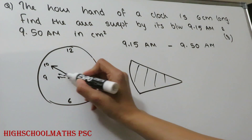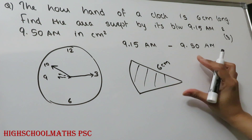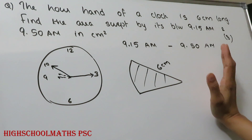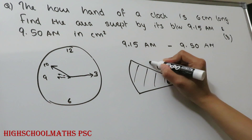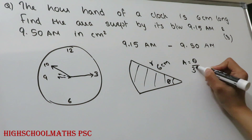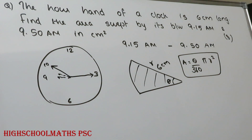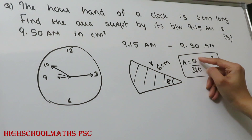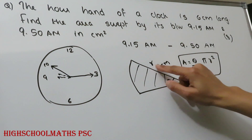The length of the hour hand is 6 cm, and we use the area of a sector formula. We have already discussed the area of a sector in class. The equation for the area of a sector is: Area = θ/360 × πr², where θ is the central angle and r is the radius.